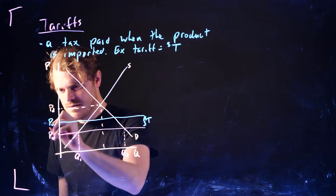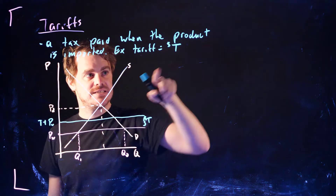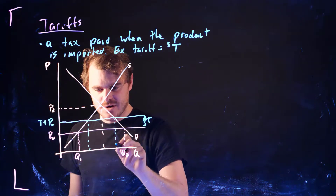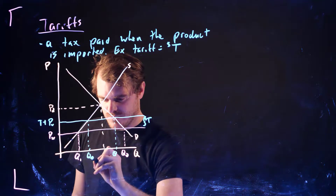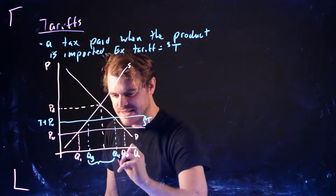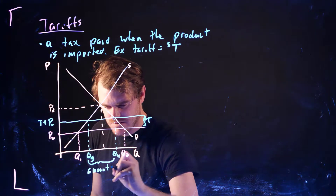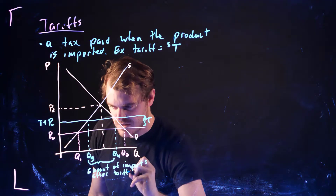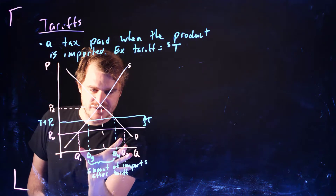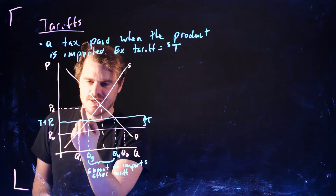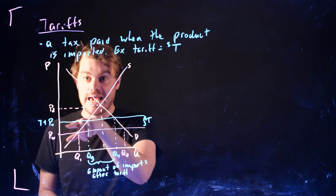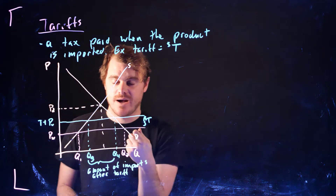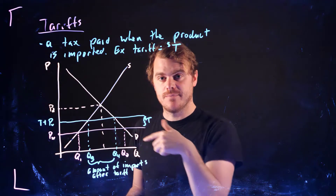Now the price in Canada is going to be the world price plus T dollars — the difference between these two lines is this tariff of size T. After the tariff, the amount of imports falls to Q4 minus Q3. Canadian producers produce a bit more because the price went up, and Canadian consumers demand a bit less because the price went up.